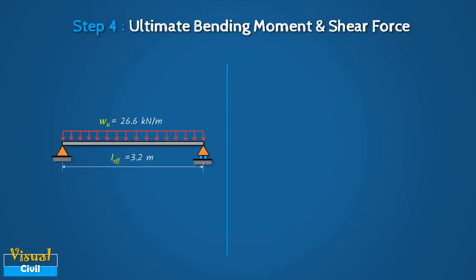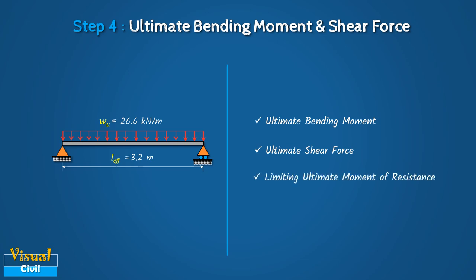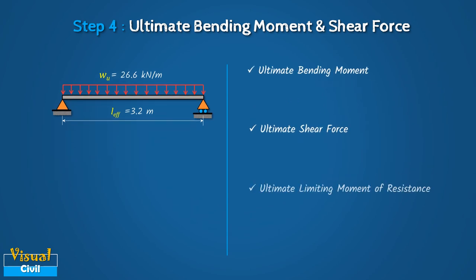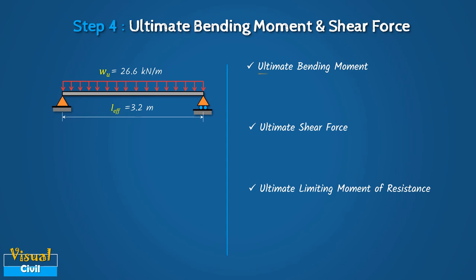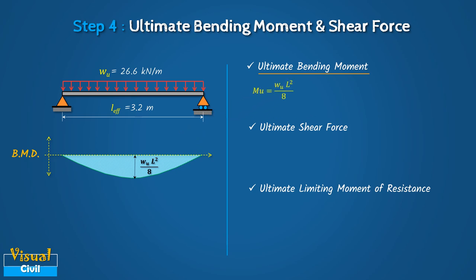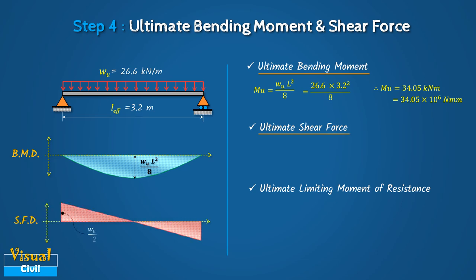In Step 4, we compute the ultimate bending moment and ultimate shear force due to design load. The maximum bending moment for the simply supported beam is WL² by 8 at mid-span. By putting the value of design load and span, we get MU equal to 34.05 kNm. Next, compute the ultimate shear force, which is equal to WL by 2. We get VU equal to 42.56 kN.